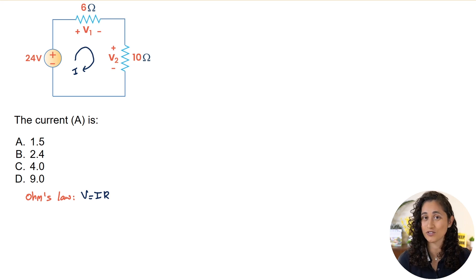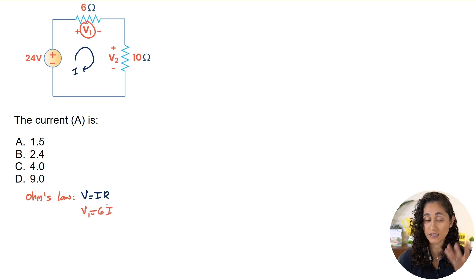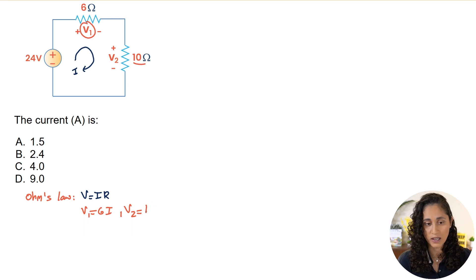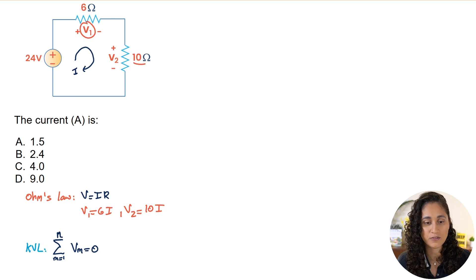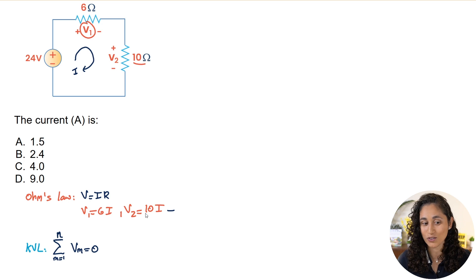Let's first apply Ohm's law: voltage equals current times resistance. So V1 equals 6 times I, because the resistor is 6 ohms. V2 equals 10 times I, because that resistor is 10 ohms. Notice that even though we have two equations, we still cannot determine I because we don't have V1 or V2 — that's why we need KVL.